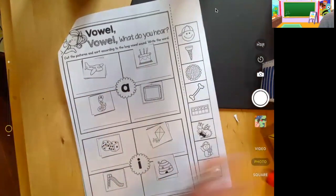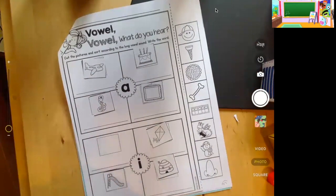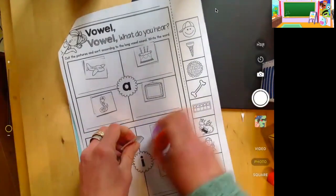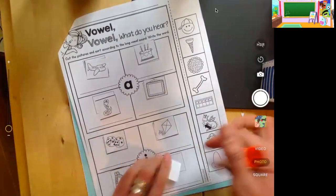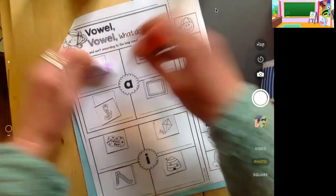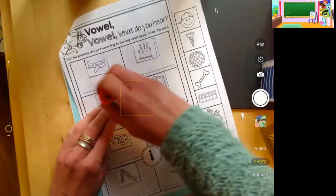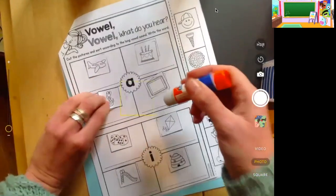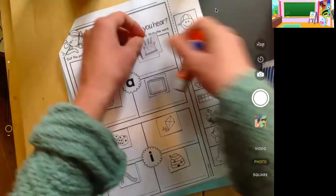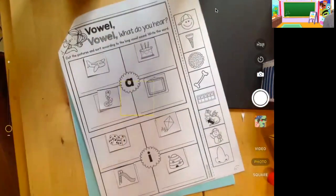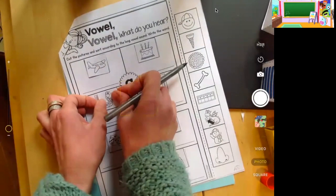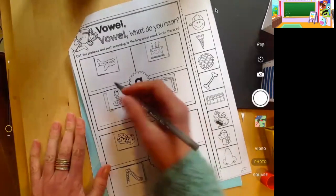So now I'm going to glue them all down nice and neat. And then I'm going to write the words. So this word, snake got crooked. This word is plane.